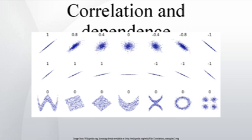In the same way, if y always decreases when x increases, the rank correlation coefficients will be minus one, while the Pearson product moment correlation coefficient may or may not be close to minus one, depending on how close the points are to a straight line. Although in the extreme cases of perfect rank correlation the two coefficients are both equal — being both plus one or both minus one — this is not in general so, and values of the two coefficients cannot meaningfully be compared. For example, for the three pairs (1,1), (2,3), (3,2), Spearman's coefficient is 1/2 while Kendall's coefficient is 1/3.